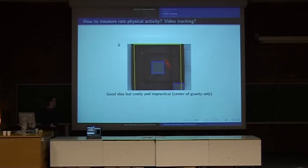A third method is just video tracking. You put the rat in the cage and you follow him. That's a good idea. But usually it's costly because there is no free implementation. And the second point, it's impractical because what the software does is it takes the animal, takes the center of gravity only, and then puts some red points all over the animal. So your animal is there, but what it measures is only the center of gravity. So again, it's motor activity and not general activity.